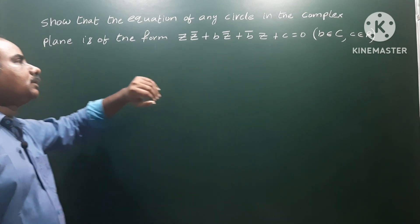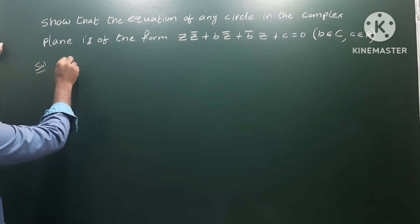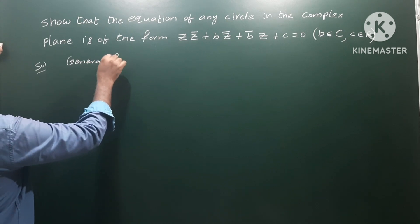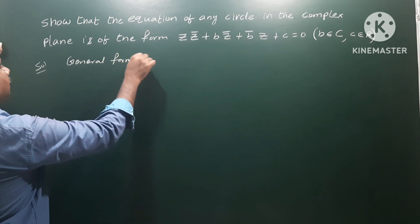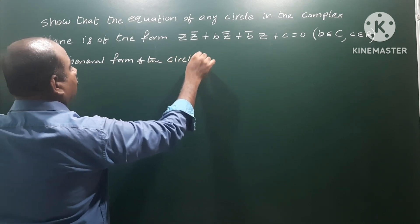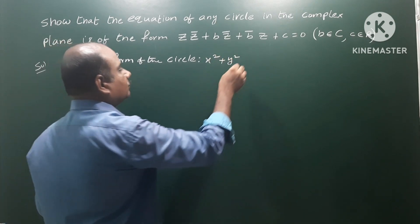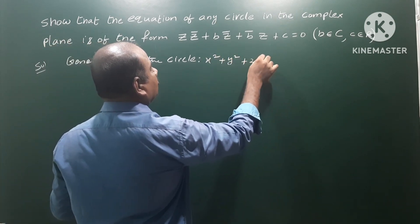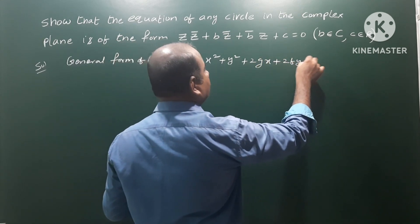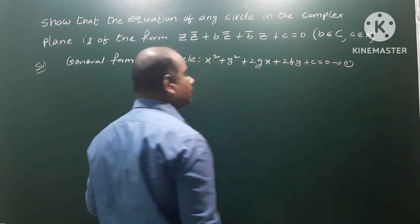The general form of the circle in the coordinate plane is: x² + y² + 2gx + 2fy + c = 0. Let us call this equation number one.